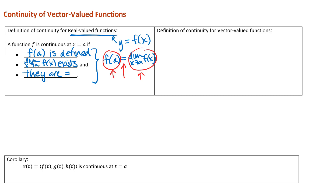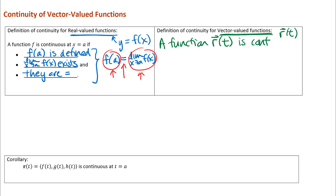Now we want to take this definition and extend it to vector-valued functions — functions r of t, where the input is a real number and the output is a vector. When we think about where r of t is continuous, that's defined in terms of the input, so we say at t equals a. The main difference here is really just notation — the function name and what we call the input.